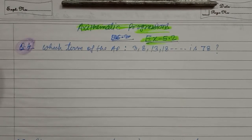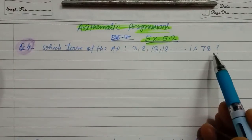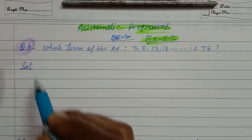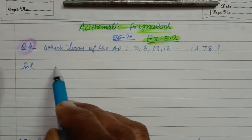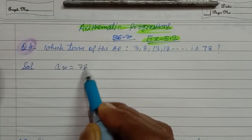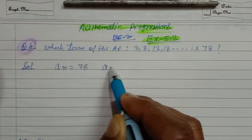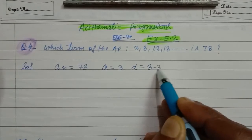Question number 4: Which term of the AP is 78? Students, ہمیں نہیں پتا کی کون سا term وہ 78 ہے، تو ہم نے مان لیا nth term is 78، یعنی an جو ہے وہ 78 ہے۔ a equal to 3 اور d is equal to 8 minus 3۔